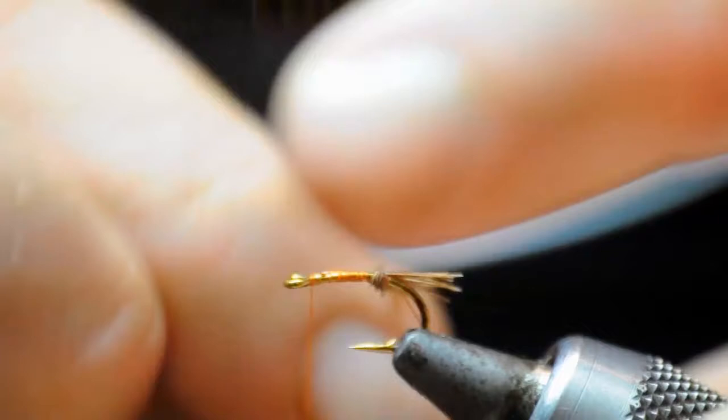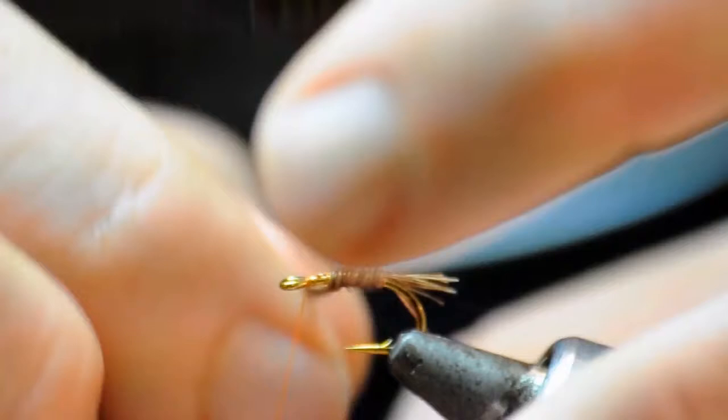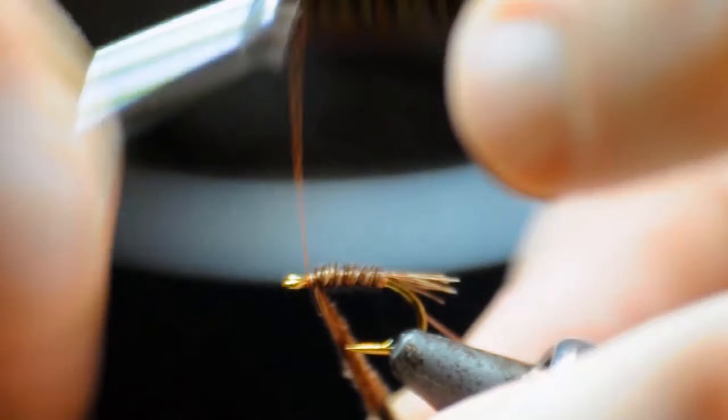Then I'll follow the thread up with the pheasant tail fibers, just wrapping them in connected wraps to form the body of the fly. I'll tie them off just ahead of the eye there.